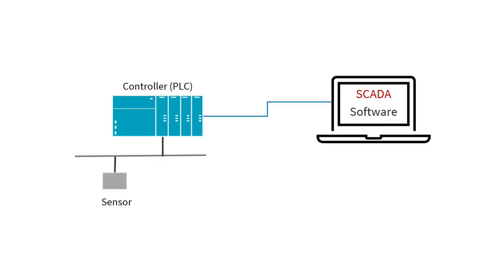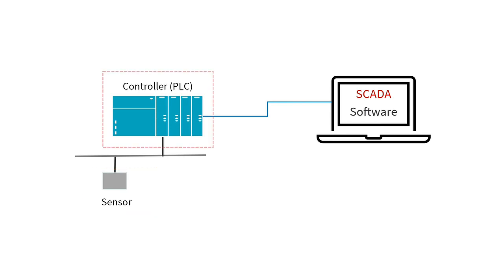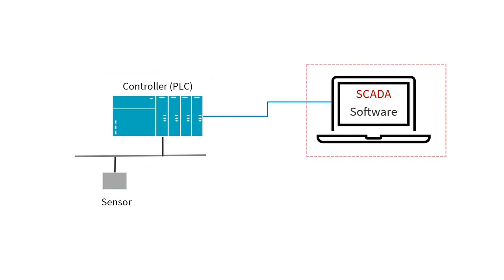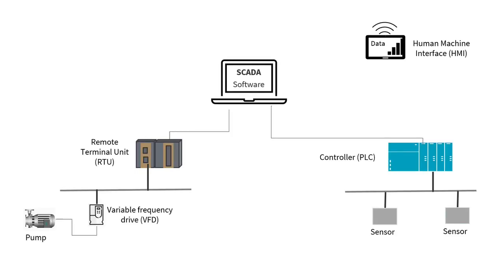A SCADA system can be a small system like the example you see on the screen, consisting of a sensor, a controller — which is a PLC in this case — and a SCADA software. It can be in one location, or it can be a big system covering multiple remote locations, including multiple devices and software.